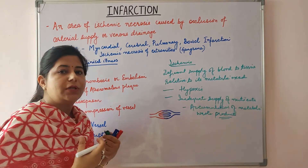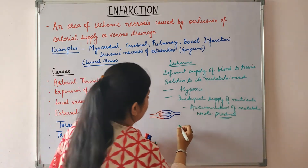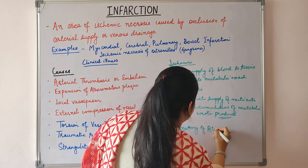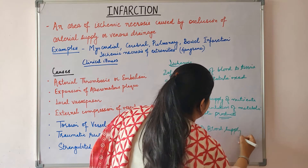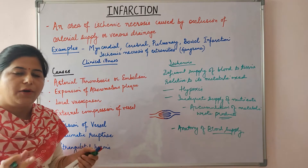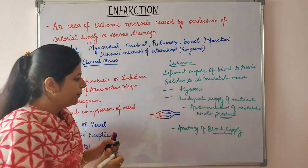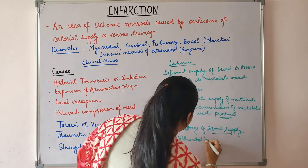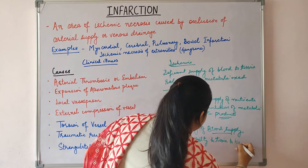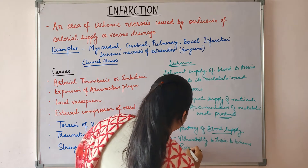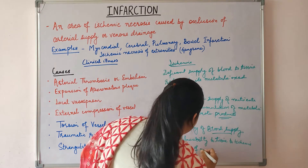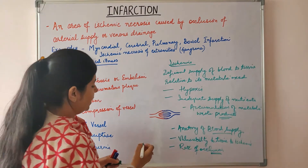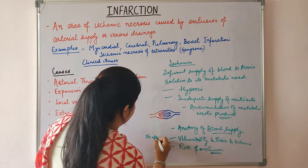The outcome of ischemia depends on various factors: the anatomy of blood supply — whether the tissue is supplied by an end artery, has dual blood supply, or is rich in collaterals — the vulnerability of the tissue to ischemia, and the rate of development of ischemia. If occlusion is occurring fast or slow makes a difference.